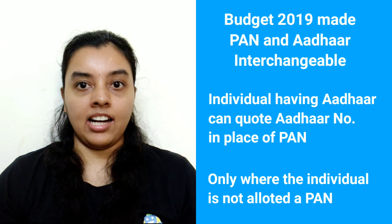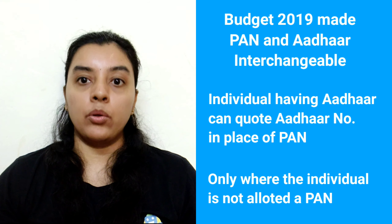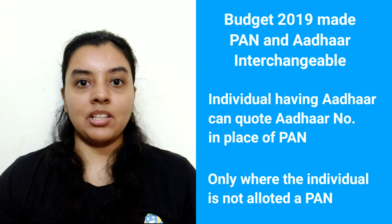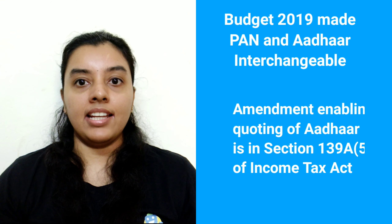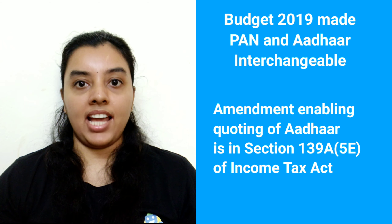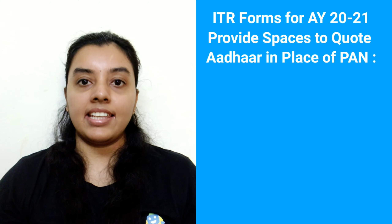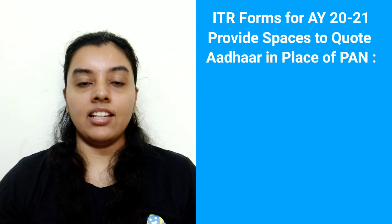That means an individual having Aadhaar can quote the Aadhaar number in place of PAN. Do note that this facility is only available where the individual is not allotted a PAN. The amendment enabling quoting of Aadhaar is found in section 139A-5E of the Income Tax Act of 1961. Once an individual quotes their Aadhaar number, the department themselves will allot PAN to the individual. You can also file your ITR using Aadhaar number in case you do not have a PAN. The ITR forms notified for assessment year 2020-21 carry additional spaces to quote Aadhaar in the place of PAN.